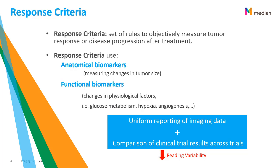The second part of assessing response is the use of criteria. Response criteria are a set of rules to objectively measure tumor response or disease progression after treatment. They also involve the use of specific metrics — for example, distance plus biomarkers for the size of the lesion. Response criteria involve various types of biomarkers, including anatomical biomarkers such as the change in tumor size, and functional biomarkers such as changes in the physiology or makeup of the tumor. We find these changes using specific imaging modalities such as PET or contrast-enhanced MRI.